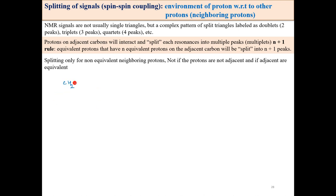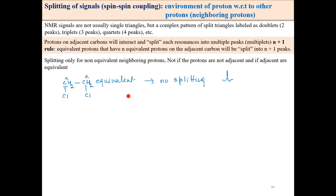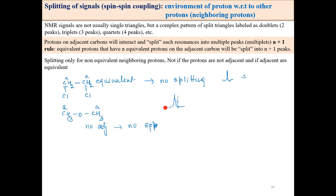For CH3-CH2-CH2-Br: three types of protons A, B, C — three signals. The CH3 signal (A) splits because of neighboring CH2 (B) with two protons: 2+1=3, a triplet. The CH2 (B) splits because of both A (3 protons) and C (2 protons) — this gives a complex multiplet. The CH2 (C) attached to bromine splits because of neighboring CH2 (B) with two protons: 2+1=3, also a triplet.